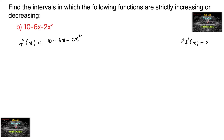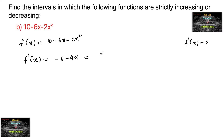The behavior of the graph will change at the position where f dash of x is equal to 0. So let's differentiate this. f dash of x is equal to minus 6 minus 4x, or we can write it as minus 2 of 2x plus 3.